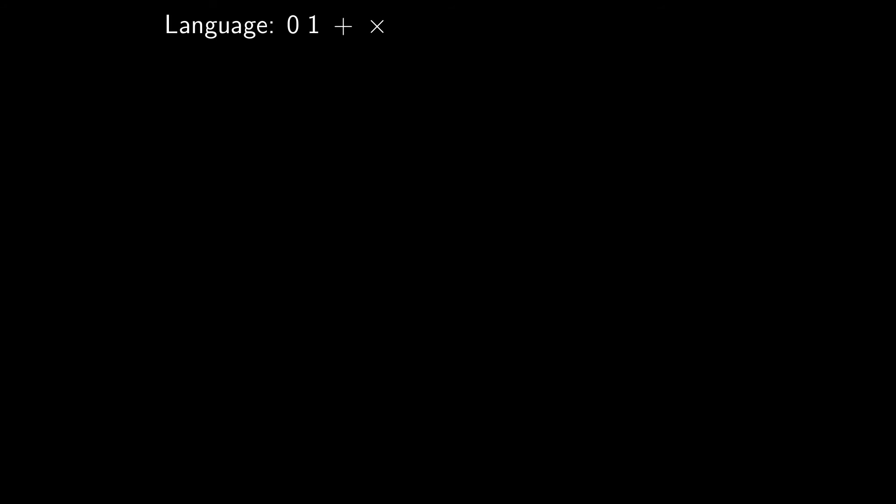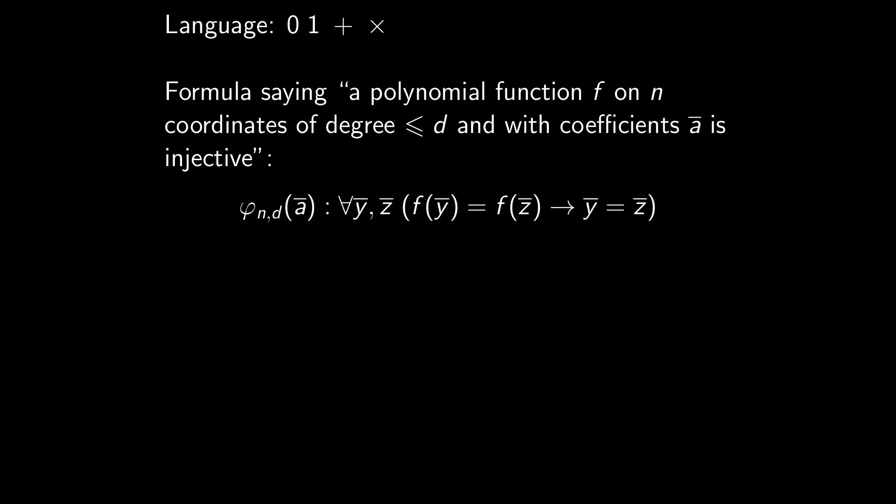Here's my language. It contains 0, 1, plus, and times. In this language, I can write a formula saying a polynomial function f on n coordinates of degree less than d and with coefficients a is injective. We just write, for all y and z, f of y equal f of z implies y equal z. Of course, f is not in my language, but polynomials can be written with plus and times. I just need coefficients, which are here put in non-quantified variables of my formula. And I specify n and d to make sure my formula is not infinitely long. If you don't really believe that I can write things like that, you can check in the description for my main source, where the formula is written more precisely.